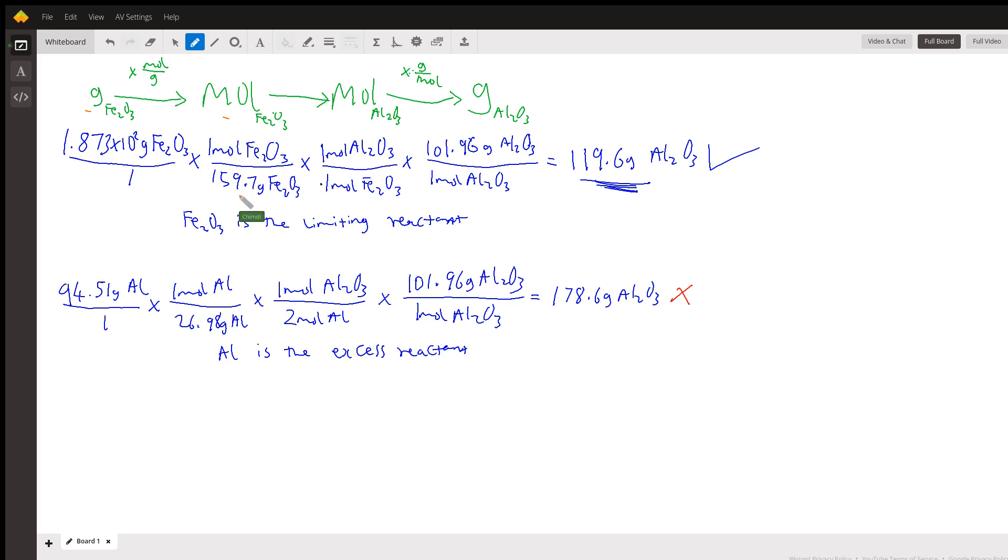The next step is the mole to mole conversion. We were converting iron three oxide to aluminum oxide, and the only way we can do that is by using the mole ratio from the balanced chemical equation.